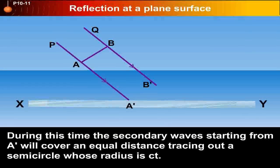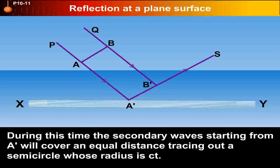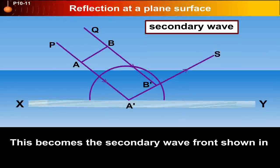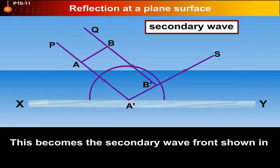During this time, the secondary waves starting from A' will cover an equal distance, tracing out a semicircle whose radius is CT. This becomes the secondary wavefront as shown over here.